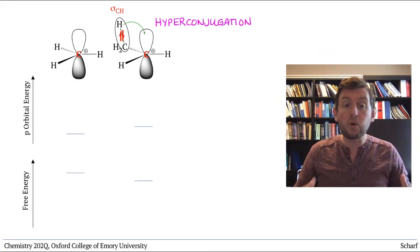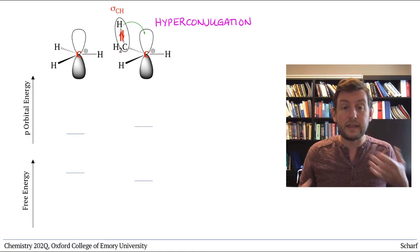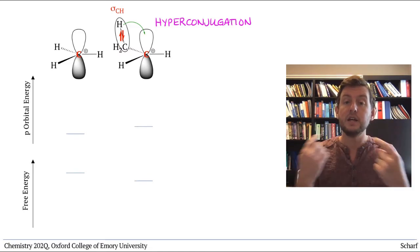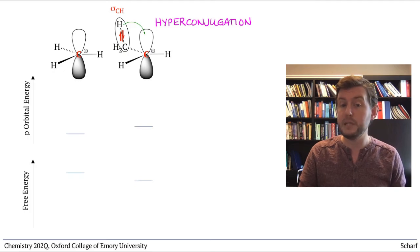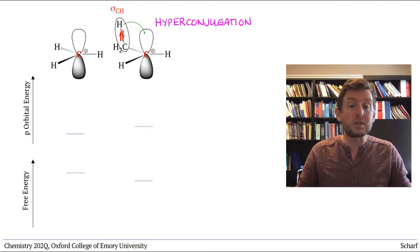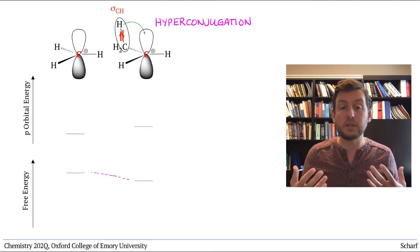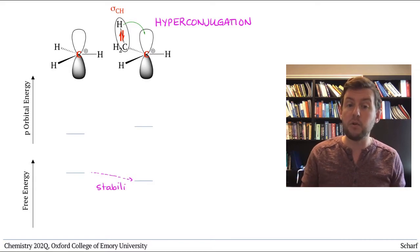The more of it that can occur—that is, the more sigma bonds that are adjacent to a carbocation's empty P orbital—the more satisfied that P orbital is and the more stable the carbocation.